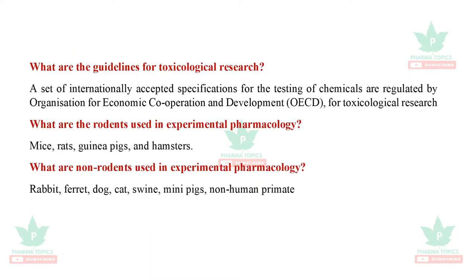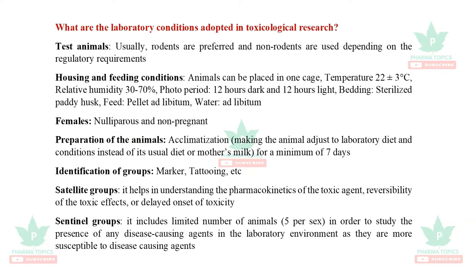A set of internationally accepted specifications for testing of chemicals is regulated by the Organization for Economic Cooperation and Development for toxicological research — that is the OECD guidelines. Rodents used in experimental pharmacology include mice, rats, guinea pigs and hamsters. Non-rodents used include rabbits, ferrets, dogs, cats, swine, mini pigs and non-human primates.